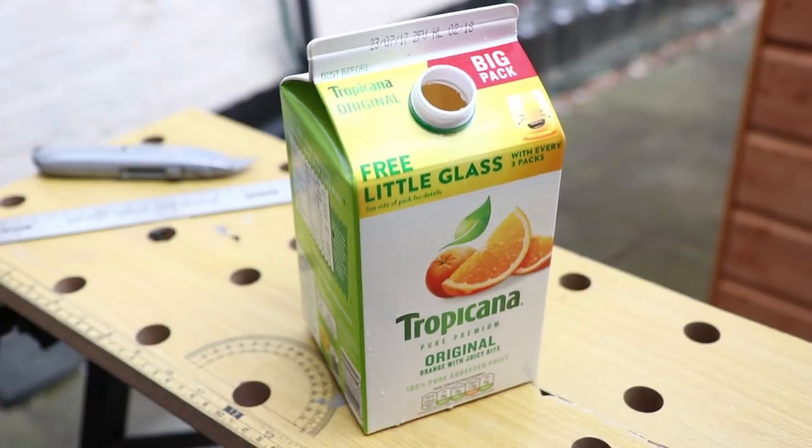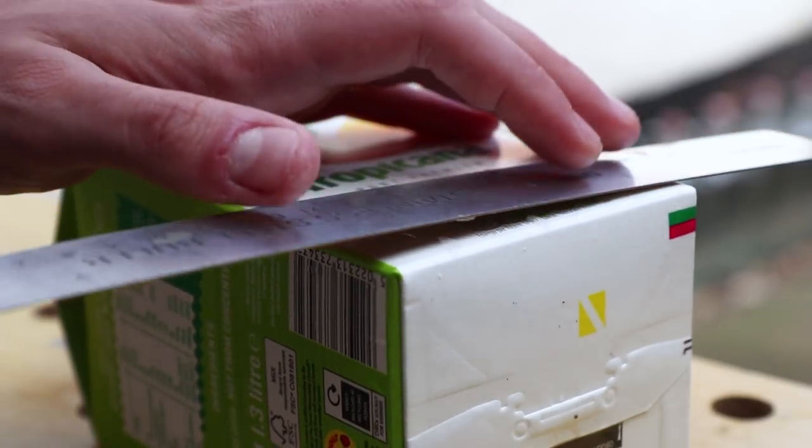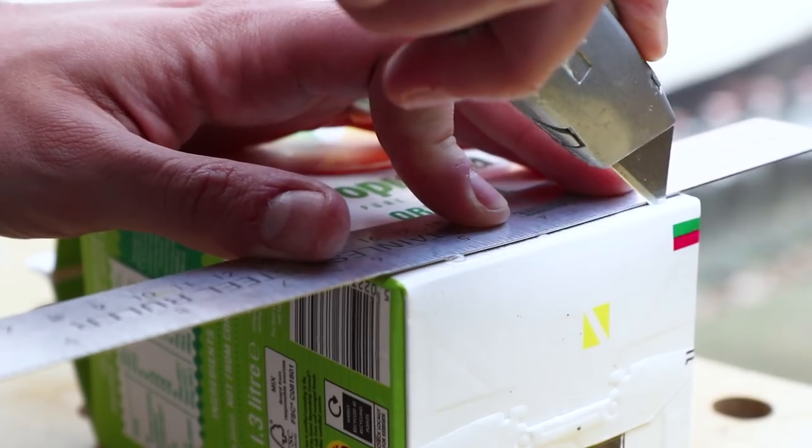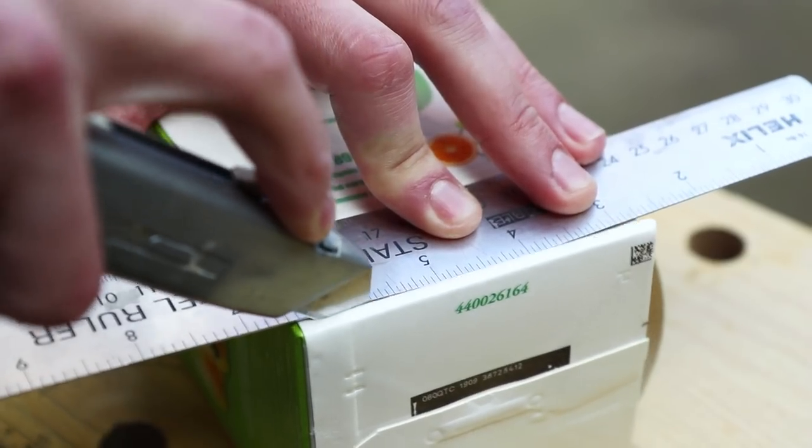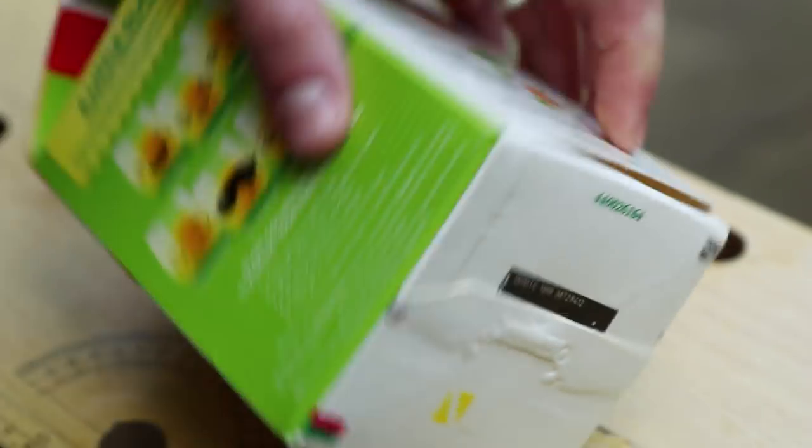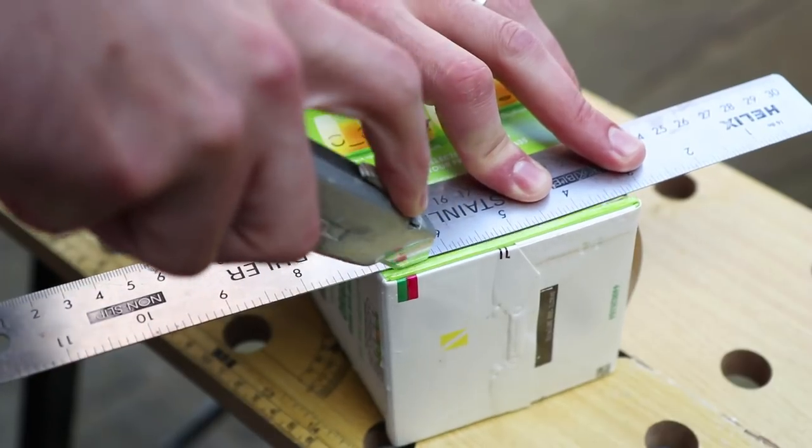Firstly take a juice carton where the base of it is slightly smaller than the base of your lamp. Then using a sharp knife and a stainless steel ruler to guide you, carefully cut the bottom off the carton, paying extra attention to make sure the cut is as straight as possible.